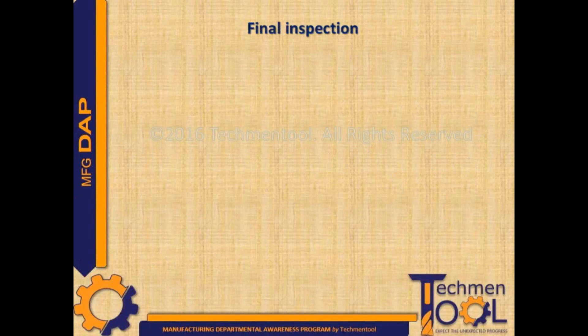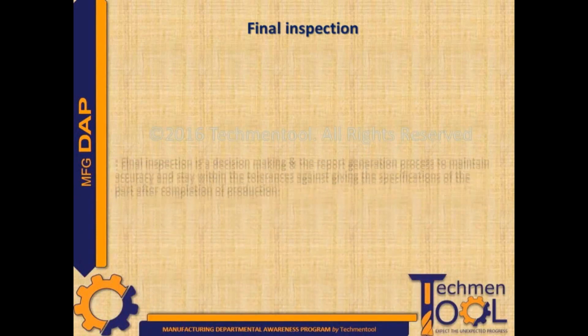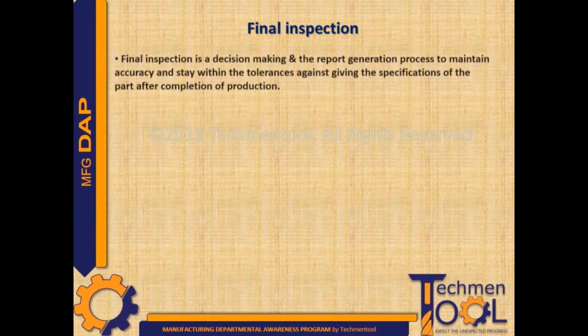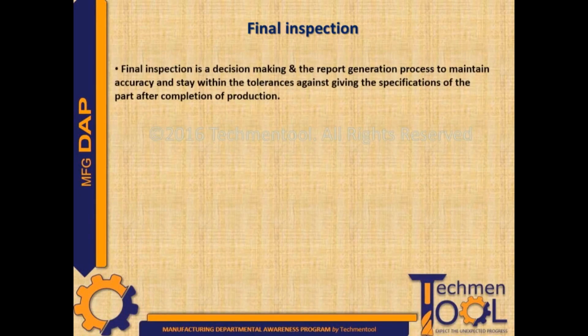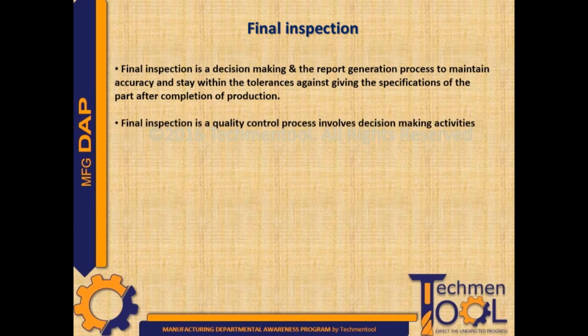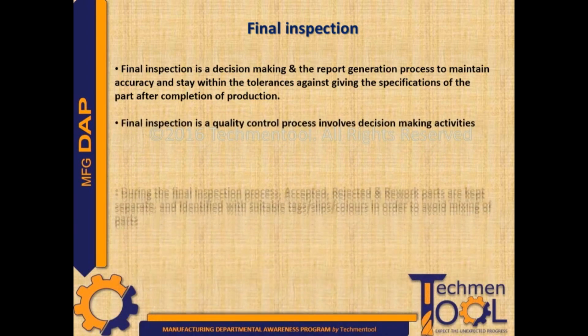The final inspection is a decision-making and report generation process to maintain accuracy and stay within the tolerances against the given specification of the part after completion of production. Final inspection is a quality control process that involves decision-making activities.